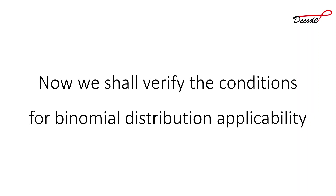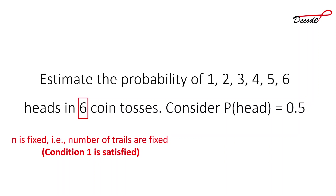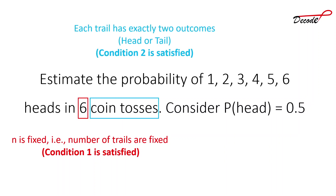After decoding the required parameters, we will check whether this problem satisfies the conditions for applying binomial distribution. The very first condition is there needs to be a fixed number of trials — here n is fixed at six, so condition one is satisfied. The second condition is each trial should have exactly two outcomes. A coin toss has exactly two outcomes: head or tail, so condition two is satisfied.